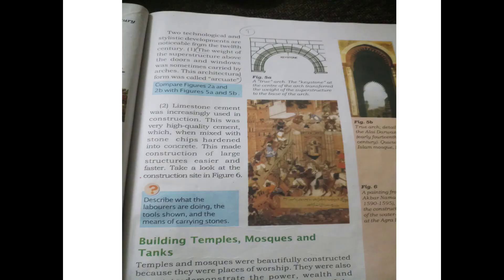There were mainly two technologies and stylistic advancements in the 12th century called arcade architectural forms. These advancements used limestones.